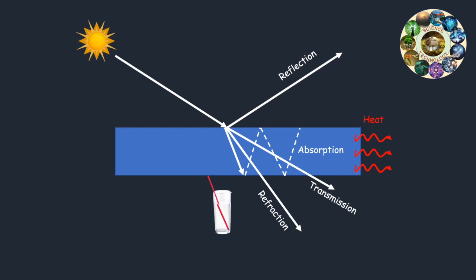In the previous video, we learned about the reflection of light from several objects. In this video, we try to learn about light transmission and absorption.